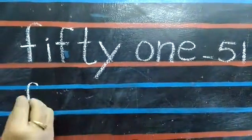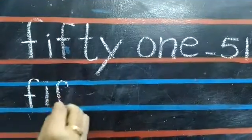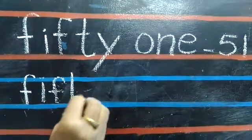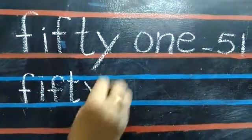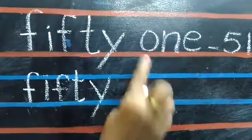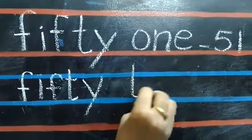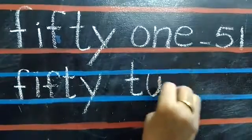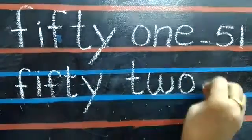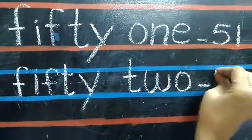F-I-F-T-Y, fifty. After one, you should write two. T-W-O, 2. Fifty-two, 52.